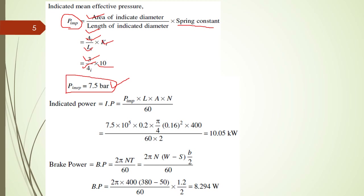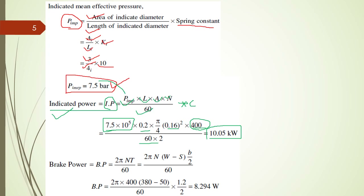Now we have to find out indicated power, IP. IP equals PMI into L into A into N into number of cylinders C, divided by 60. C is 1 because it is a single cylinder engine. Converting bar to Newton per meter squared: 7.5 into 10 to the power 5. Length and bore diameter are given. Speed is 400 RPM divided by 60 into 2. Our answer is 10.05 kilowatt.